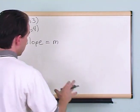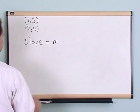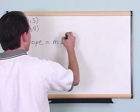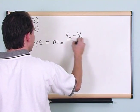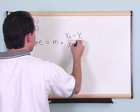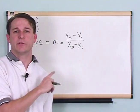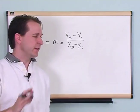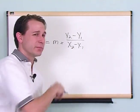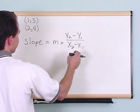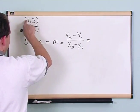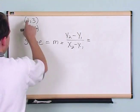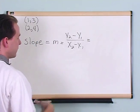For some reason they use the letter m to describe slope. What it is, is what we call y2 minus y1 over x2 minus x1. The only reason I wrote this equation on the board this way is because that's how it's written in the books. It's a very simple equation — don't let these little subscript numbers fool you. All you have to do is take the two y values and subtract them, then the two x values and subtract them.